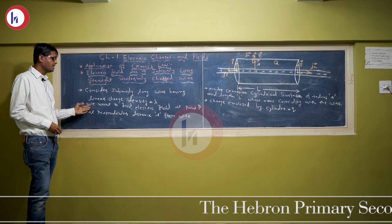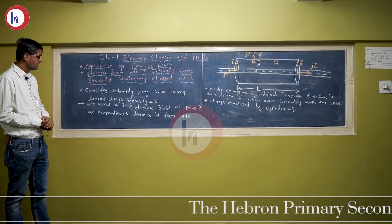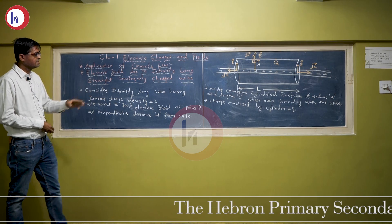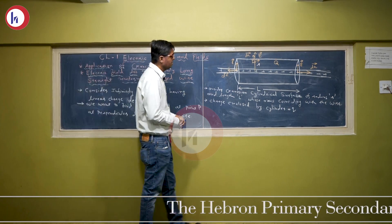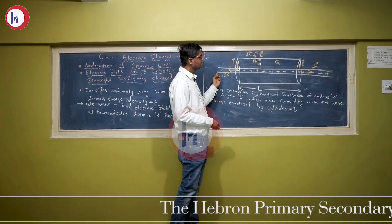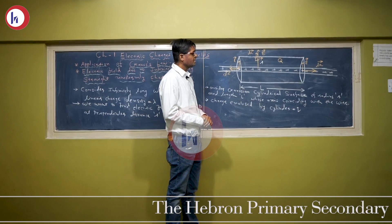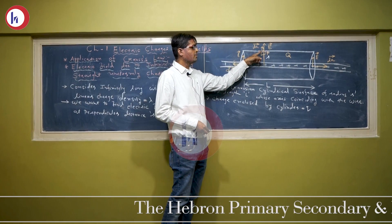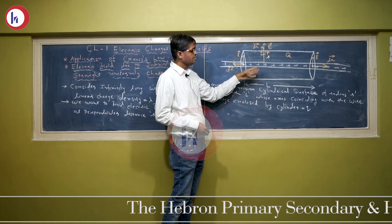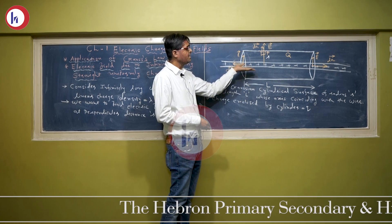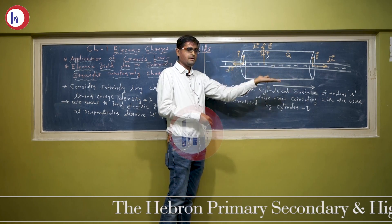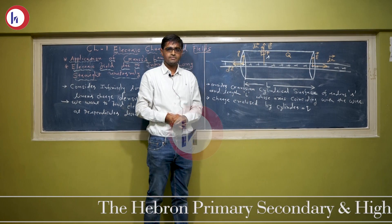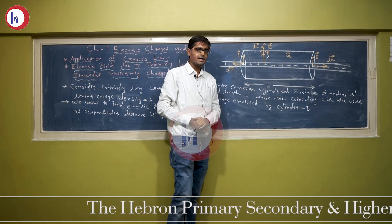We want to find out the electric field at point P, which is at a perpendicular distance r from the wire. As you can see in the figure, this is the wire having charge density lambda, and we want to find out the electric field at point P, which is located perpendicularly at distance r from the wire.